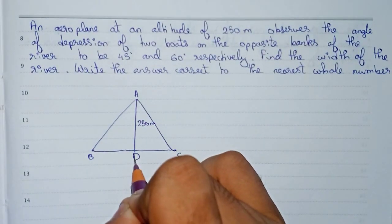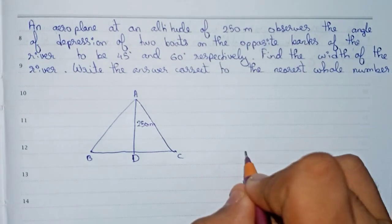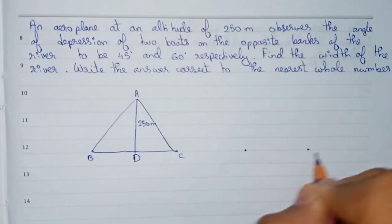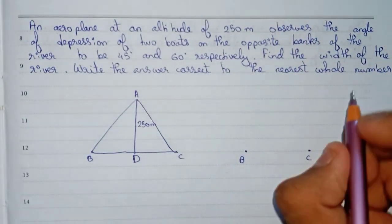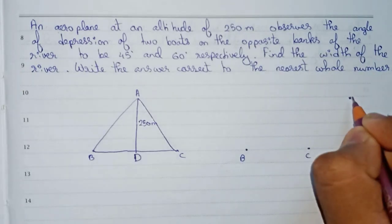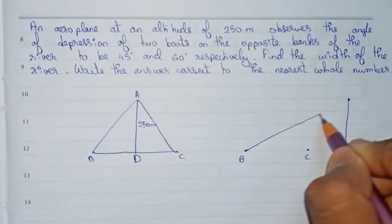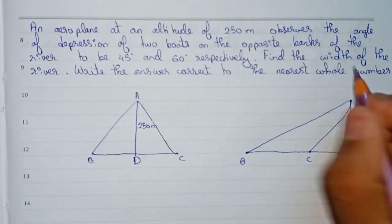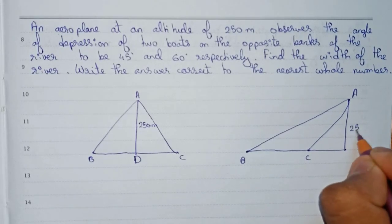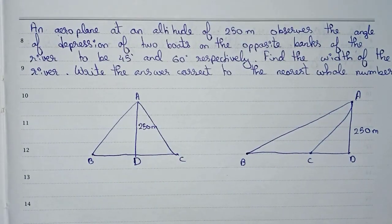Let this foot point be D, so A, B, C form a triangle. Now another configuration can be where the aeroplane is on one side — like here. If we draw an altitude from the aeroplane down, the diagram changes accordingly. Here A is at 250 meters and this foot point will be D. Since the position of the aeroplane is not mentioned, we need to consider both cases.